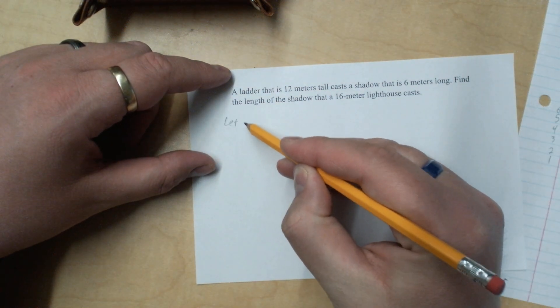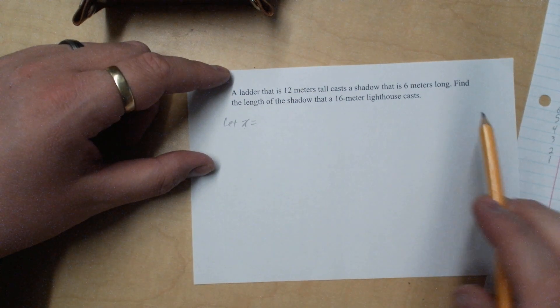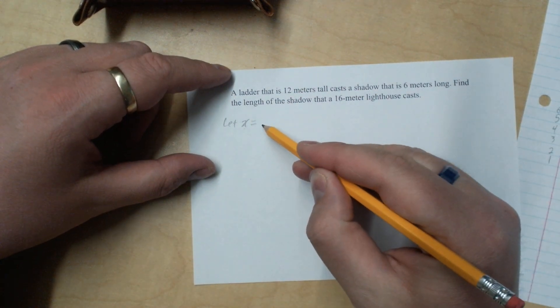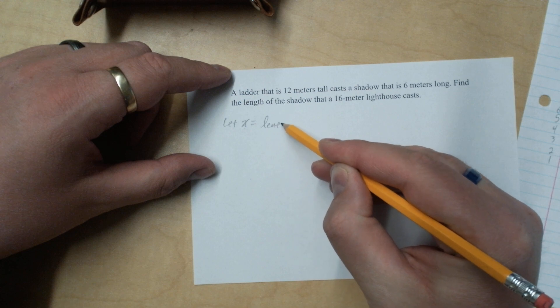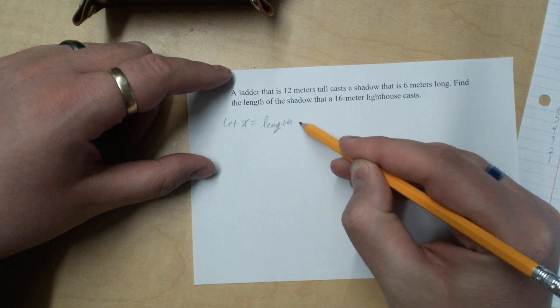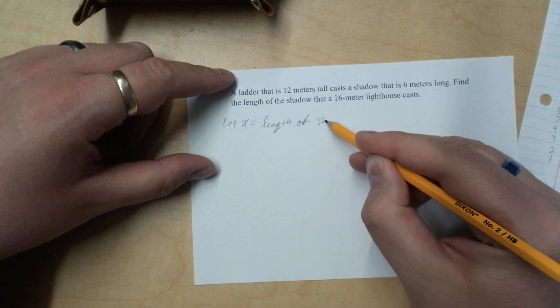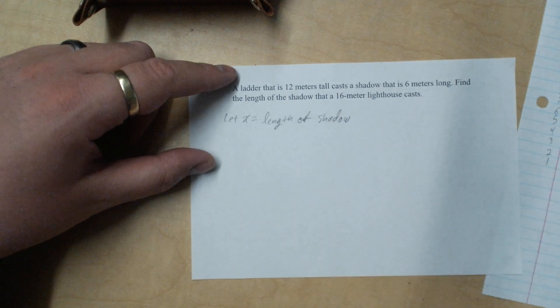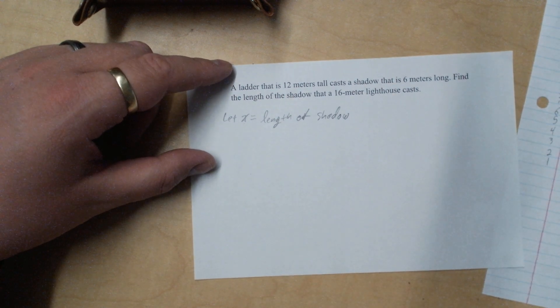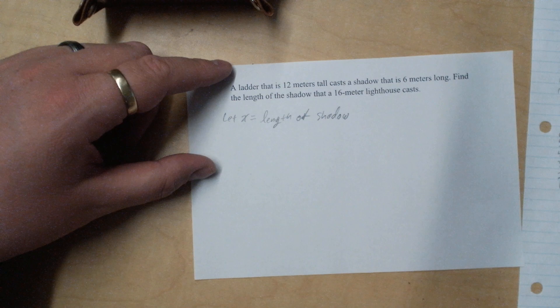Let x equal, what is it we're trying to find? Find the length of the shadow. So that is length of shadow. Now we're going to set up a proportion problem.